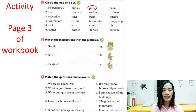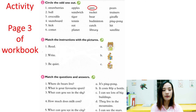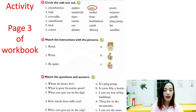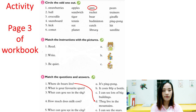For example, number one: where do bears live? The options are — A: ping-pong; B: it costs 80 pence a bottle; C: I can see lots of big buildings; D: they live in the mountains; or E: I can see the stars. The correct answer is D — they live in the mountains.